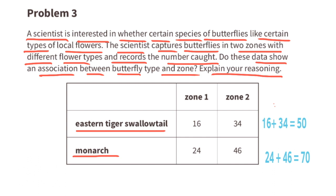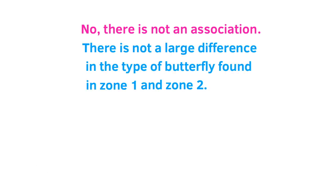16 plus 34 equals 50, so 16 out of 50 is 32% — meaning 32% of Eastern Tiger Swallowtails were captured in Zone 1 and the remaining 68% in Zone 2. 24 out of 70 is about 33% — so 33% of Monarchs were captured in Zone 1 and the remaining 67% in Zone 2. The percentages are very similar: 32% vs. 33% in Zone 1, and 68% vs. 67% in Zone 2. Therefore, the answer is no — there is not a large enough difference in the type of butterfly found in Zone 1 and Zone 2 to show an association.